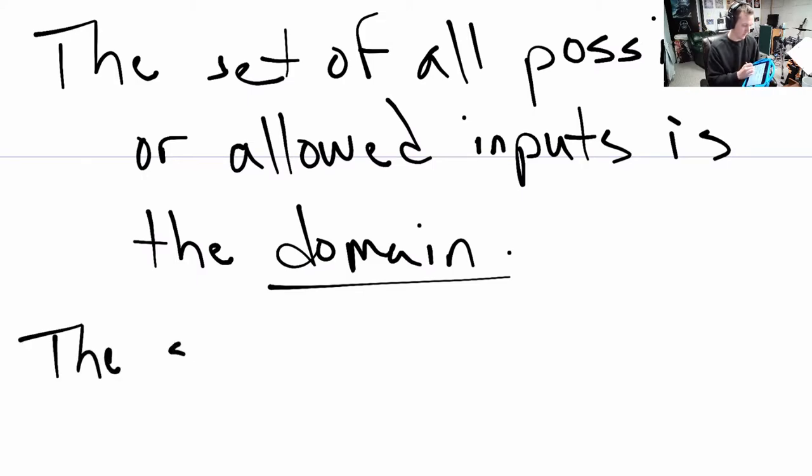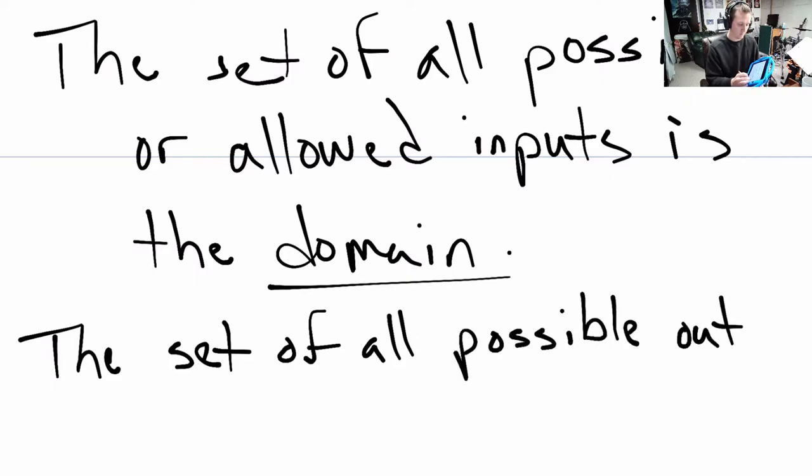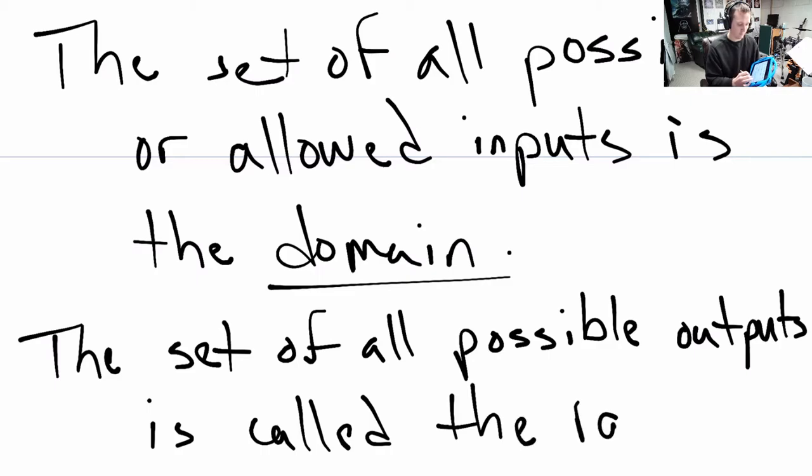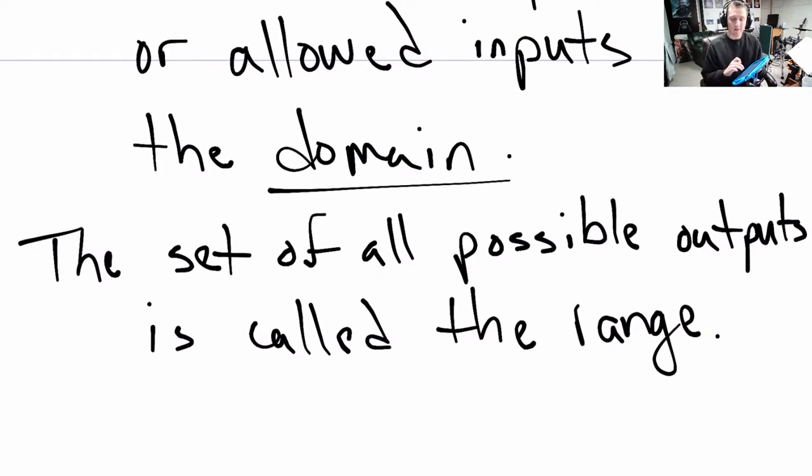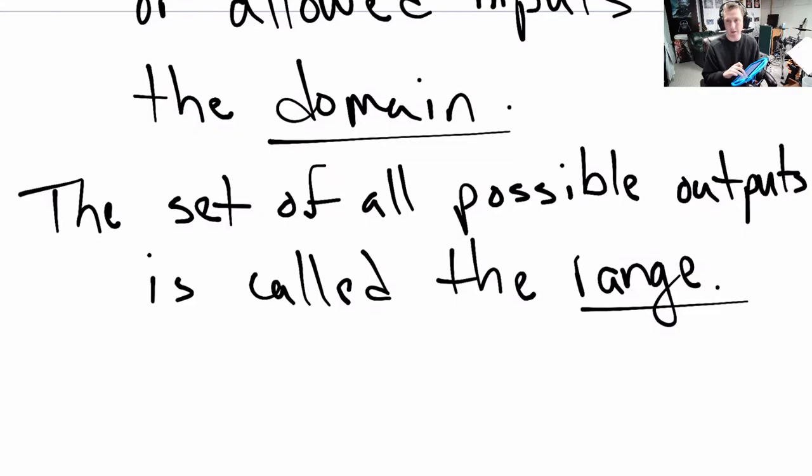The set of all possible outputs is called the range. You can think of it like literally as in a gun range. The gun range is that place where hopefully the bullets fall. It's all possible locations where you fire a gun from one end, they fall somewhere else, the range is where they fall. It's all the possible hopefully dropping locations for the bullets. The range.